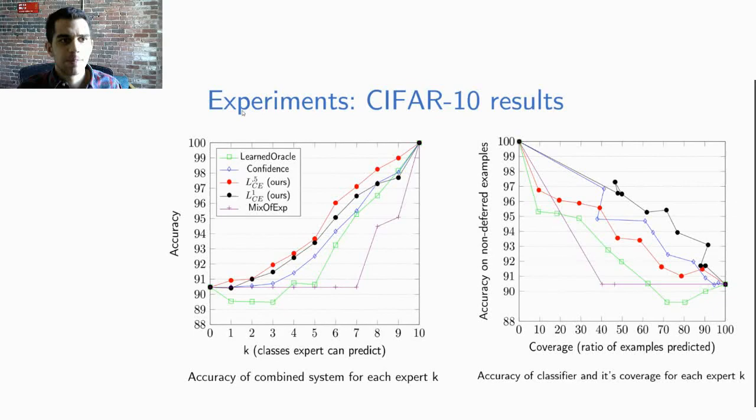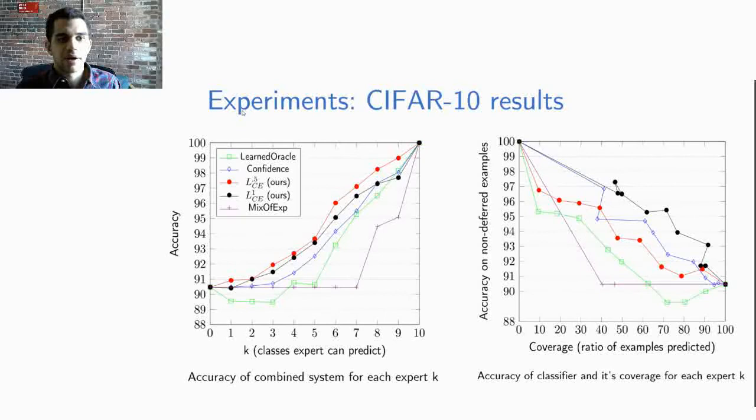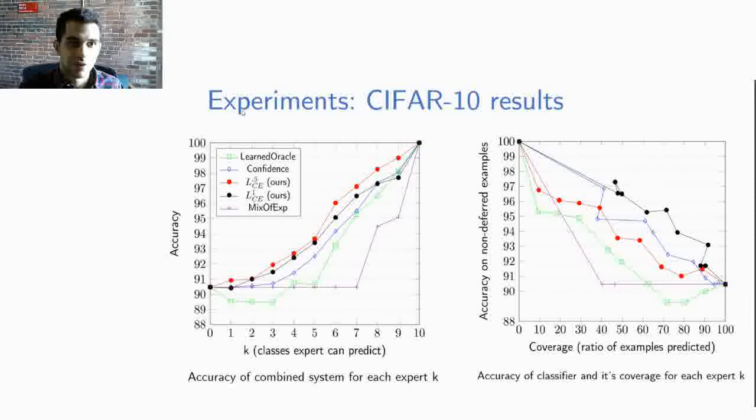To gain more insight into the behavior of our method we plot on the right the accuracy of the classifier on non-deferred examples versus the coverage. We can see that our method not only gets higher coverage meaning we are predicting a higher percent of the time but we also have a higher accuracy when we do actually predict.